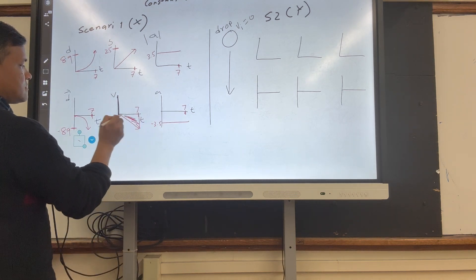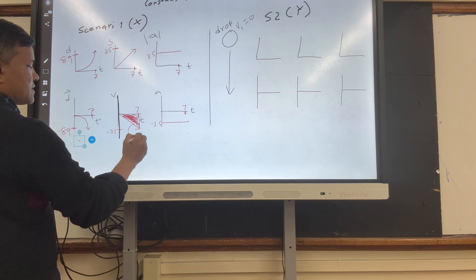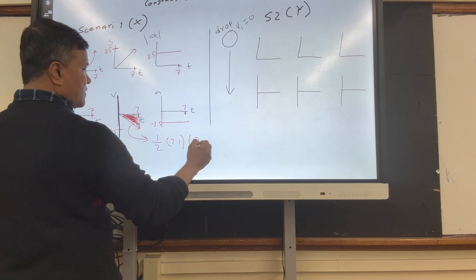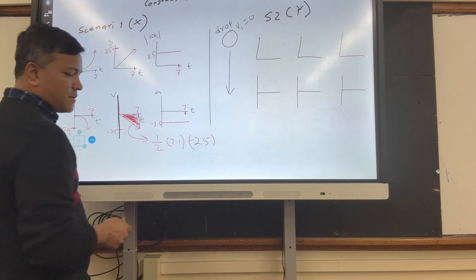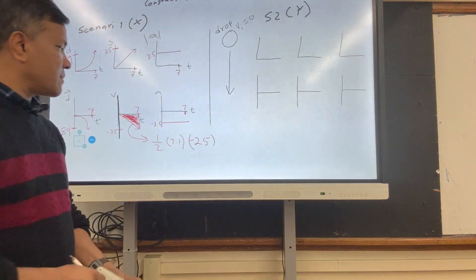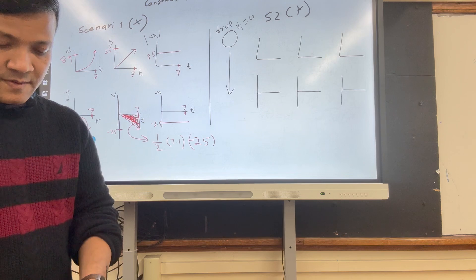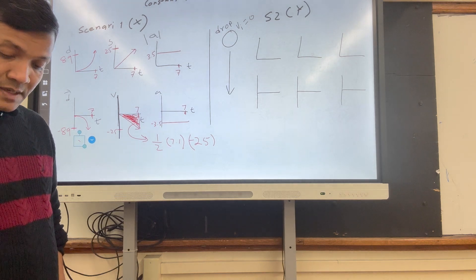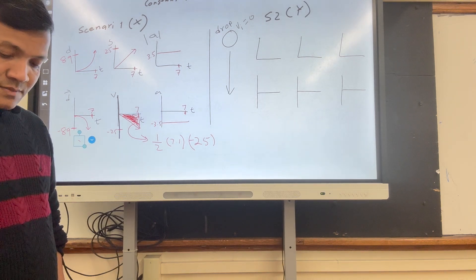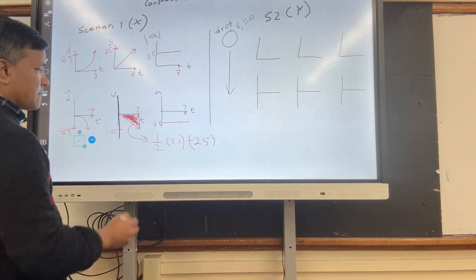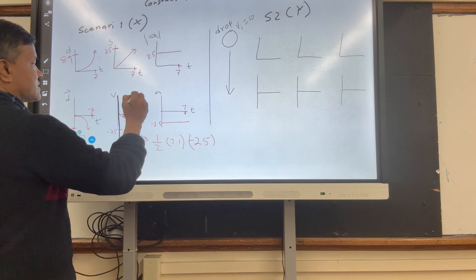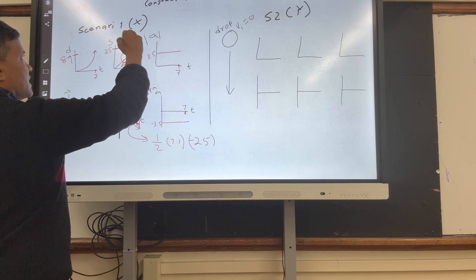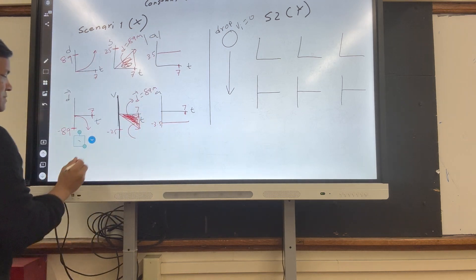You can also find d as the area under the velocity-time graph: half base times height. Half times 7.1 times 25 gives you 89. So 0.5 × 7.1 × 25 = 89. The displacement is 89 meters and the distance is 89 meters.